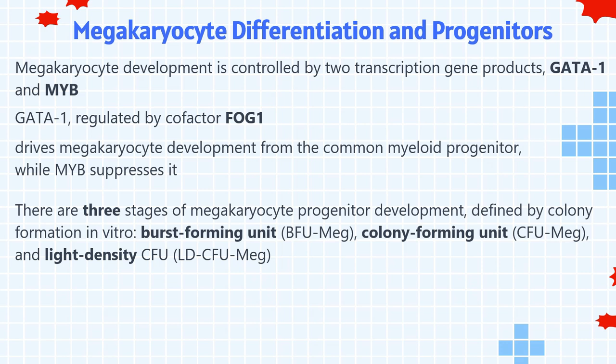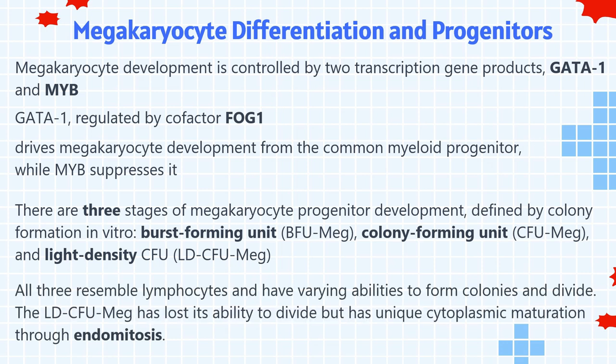There are three stages of megakaryocyte progenitor development, defined by colony formation in vitro: burst-forming unit, colony-forming unit, and light-density colony-forming unit megakaryocyte. All three resemble lymphocytes and have varying abilities to form colonies and divide. The light-density colony-forming unit megakaryocyte has lost its ability to divide but has unique cytoplasmic maturation through endomitosis.